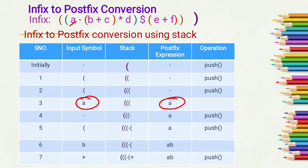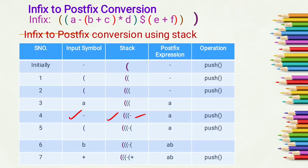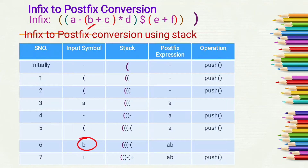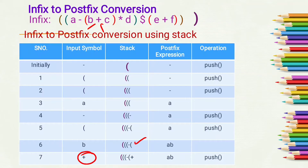The next input symbol is 'A', which is an operand, so we add it into the postfix expression. The next input symbol is minus. As all operators have higher precedence than an open bracket in the stack, we simply push minus into the stack. Next input symbol is 'B', which is an operand, so we add it into the postfix expression.